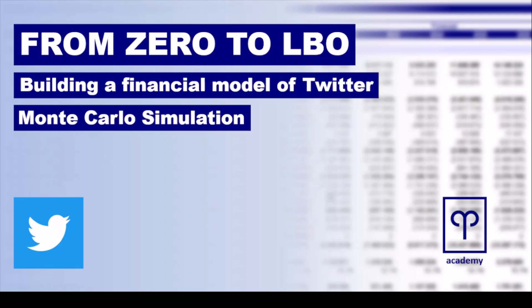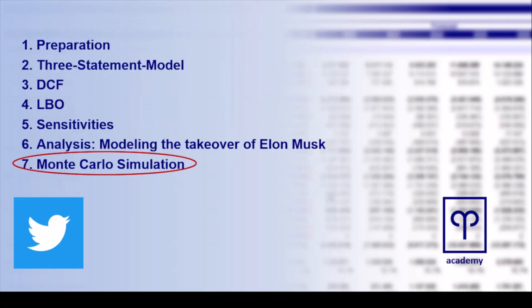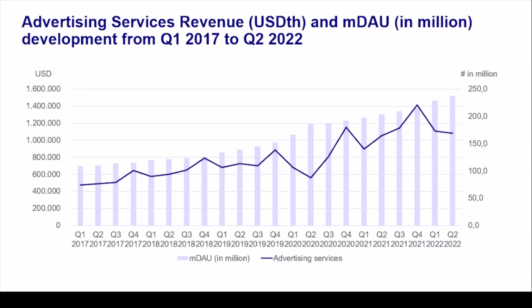Welcome back to our special extra video of our series 'From Zero to LBO'. In this video we will build a simple yet flexible Monte Carlo simulation to illustrate the impact of random sampling on different KPIs. The purpose is to show how Monte Carlo simulations could be incorporated in everyday financial modeling and potentially improve the validity of any model. As always, a brief disclaimer: the focus here is on the technical part and not on a thorough analysis.